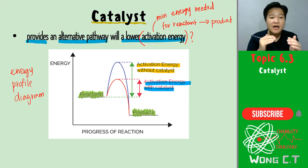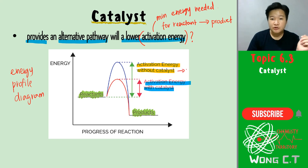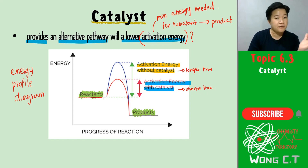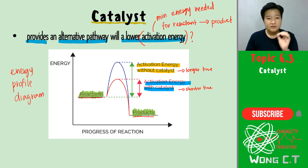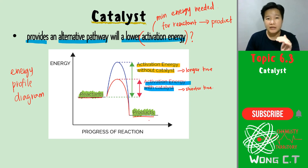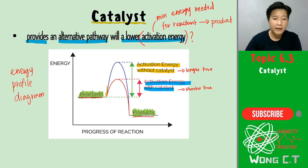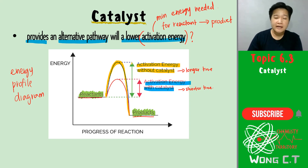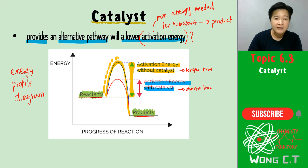The only thing that changes is the time you need from the reactant to become product. Without the catalyst, you need longer time. But if you have the catalyst, you need shorter time. The destination and starting point are still the same - you are still changing from the same reactant to the same product. So bear that in mind: catalyst will not change the reactant and product. Without catalyst, my reactant needs to go all the way up to the top - it needs to climb that high - then only it can drop and become product.